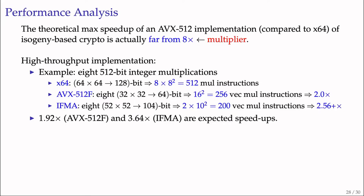Though AVX-512 can work on eight 64-bit elements simultaneously with a single instruction, the theoretical maximum speedup of an AVX-512 implementation is far from eight. The main reason is the multiplier. Taking eight 512-bit integer multiplications using the schoolbook method as an example, x64 implementation needs 64 multiplication instructions for one instance, while AVX-512F needs at least 256 vectorized multiplication instructions for eight instances, and IFMA requires 200 instructions for eight instances. Compared to x64 implementation, approximate speedup of AVX-512F is 2.0 and IFMA is 2.56. Taking this analysis into account, our throughput-optimized implementations have the expected speedups.